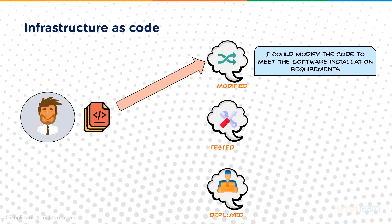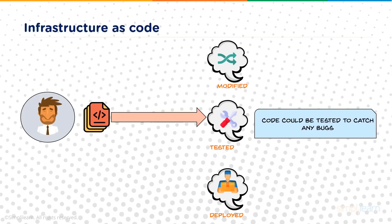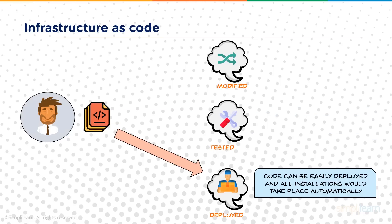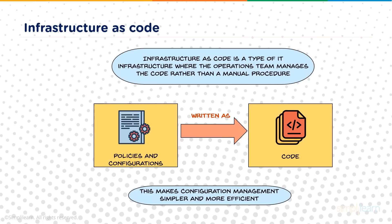Codes have several advantages. They're easily modifiable — if Tim needs MySQL on 20 systems he writes a code, and if the requirement changes to Oracle he just opens the file and makes corrections. Code is also testable — bugs can be caught and corrected before running. Code is also easily deployable, and deployable multiple times. Infrastructure as code is a type of IT infrastructure where the operations team manages code rather than manual procedures, with all policies and configurations written as code.